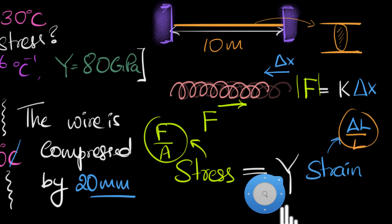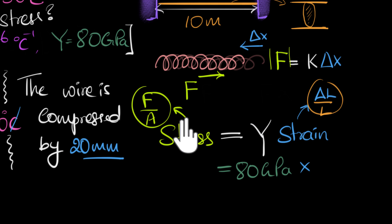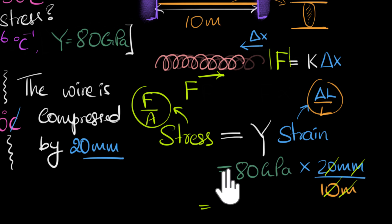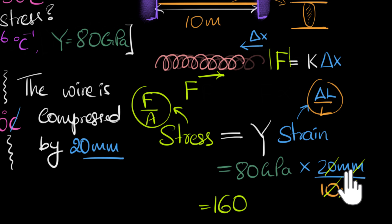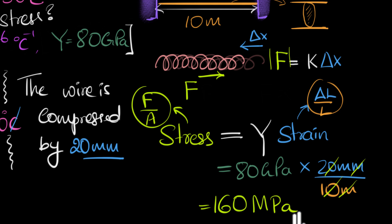Plugging in: stress = Y × (delta_L / L) = 80 GPa × (20 mm / 10 m). The 10 cancels and the meters cancel, giving 80 × 2 × 10⁻³ GPa = 160 × 10⁻³ GPa. Since giga is 10⁹, multiplying by 10⁻³ gives 10⁶, which is mega. So the thermal stress is 160 megapascals.